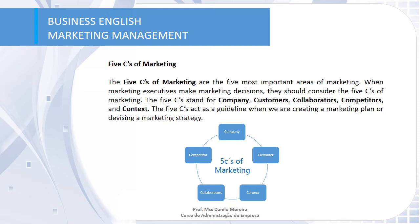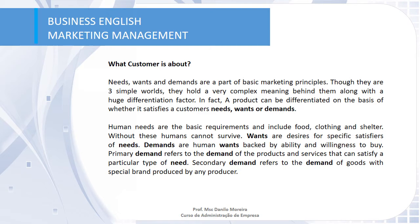The five C's of marketing are composed by company, customer, context, collaborators, and competitors. They are the five most important areas of marketing, so please remember these words. The first C we are going to look at is customer, which we can summarize in three different concepts: needs, wants, and demands.